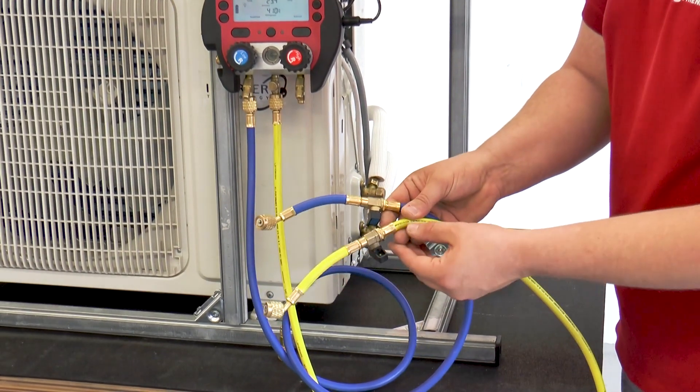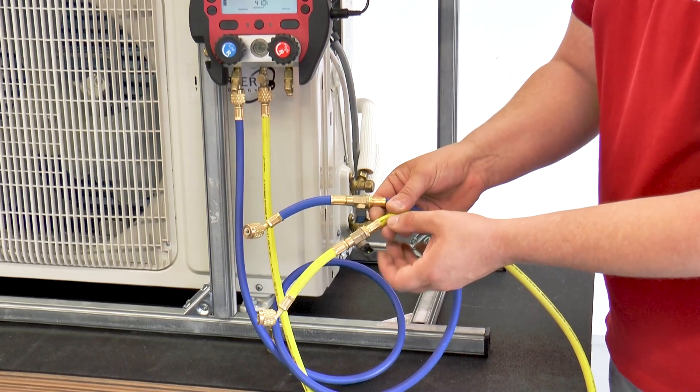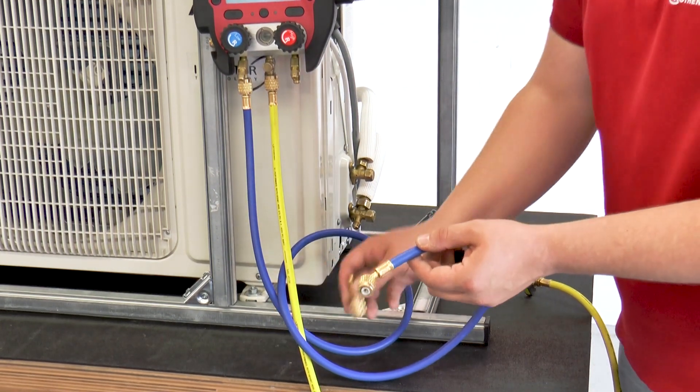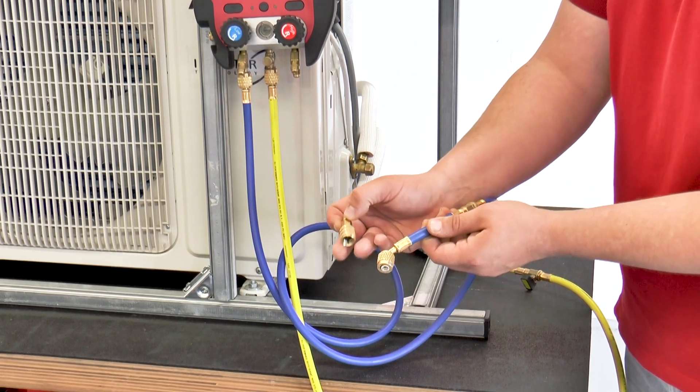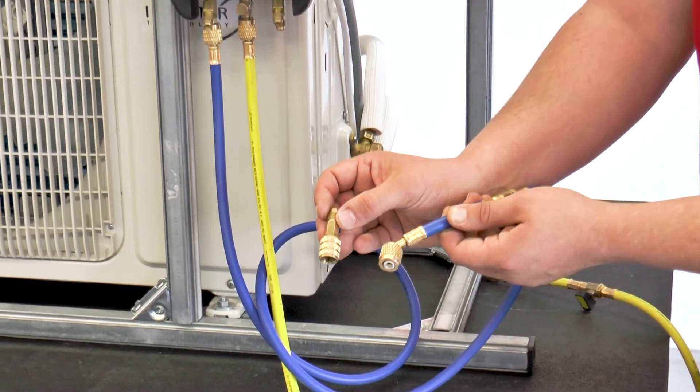After all hoses are connected and the Roll Cool is ready for use, the hose is connected to the air conditioner. R32 has a 5-16 inch SAE thread. This hose has a ¼ inch SAE thread, which means that an adapter must be used.